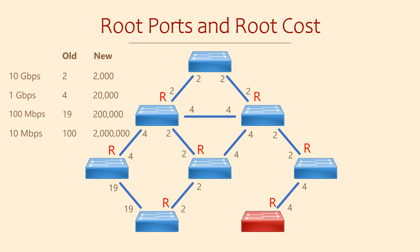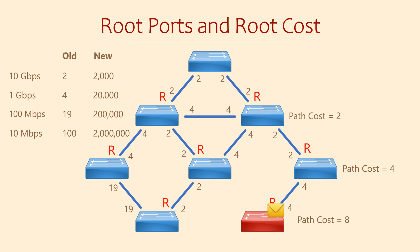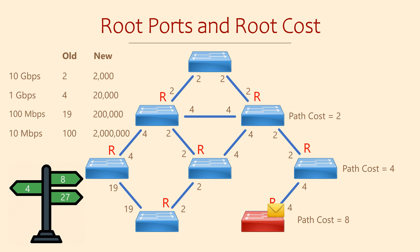In the original Spanning Tree, the root bridge continually sends BPDUs. The directly connected switches can see the cost of the interface they receive the BPDU on and therefore know how far away the root bridge is. They forward the BPDUs on, but only after adding this path cost to the message. When the next switch receives this BPDU, it will add the cost of its own interface to the value in the BPDU — now it knows the distance to the root bridge and which port is closest. If there is more than one path to the root bridge, it can also know which is the best path. The port connected to the best path is called the root port, and there can only be one root port per switch.